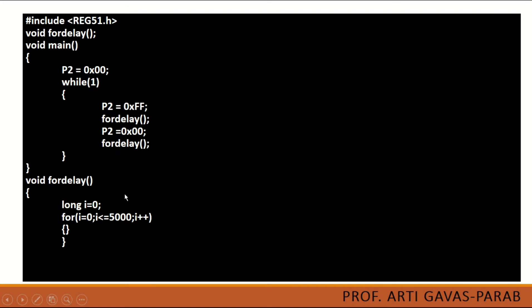I have used a for loop delay here. You can also use TMOD to generate a delay for this program. The next function is the void main function. Every embedded C program will have this void main function. In this function we have taken one port named P2, which is one of the ports provided by the 8051 microcontroller. Initially we have given the value 0x00, meaning all 8 pins of this port will be initialized to 0.